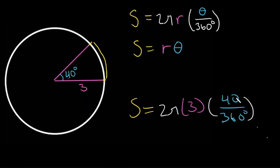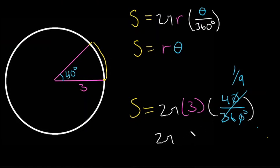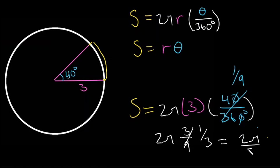So 40 over 360 — we can cancel the zeros to get 4 over 36, then divide both by 4 to get 1 over 9. Rewriting: 2π times 3 times 1/9. Three times 1/9 is 3/9, which equals 1/3. And 2π times 1/3 equals 2π/3. So this arc length is 2π/3.